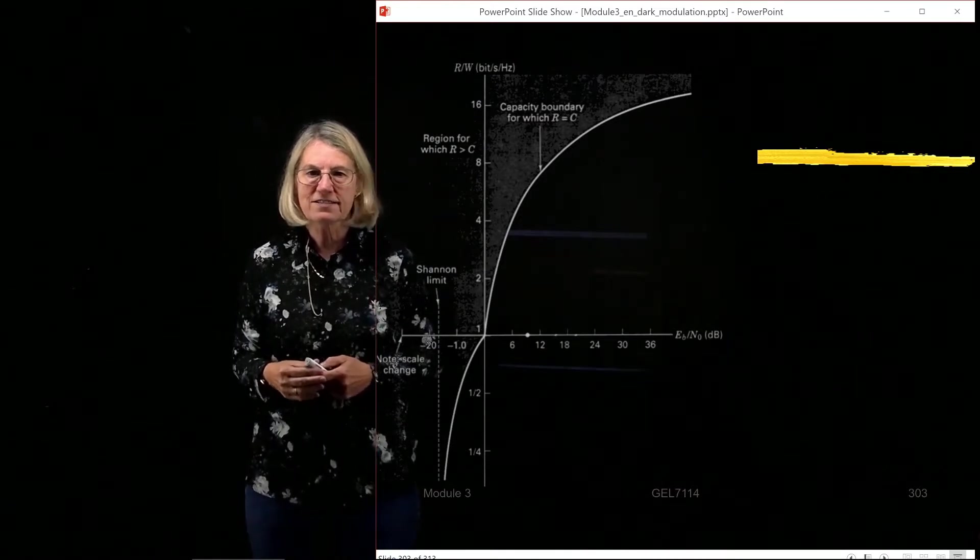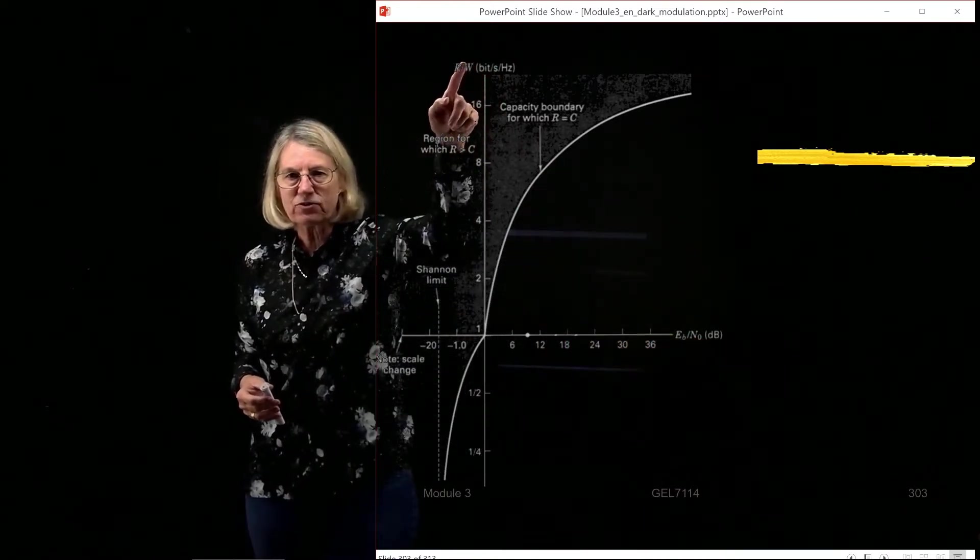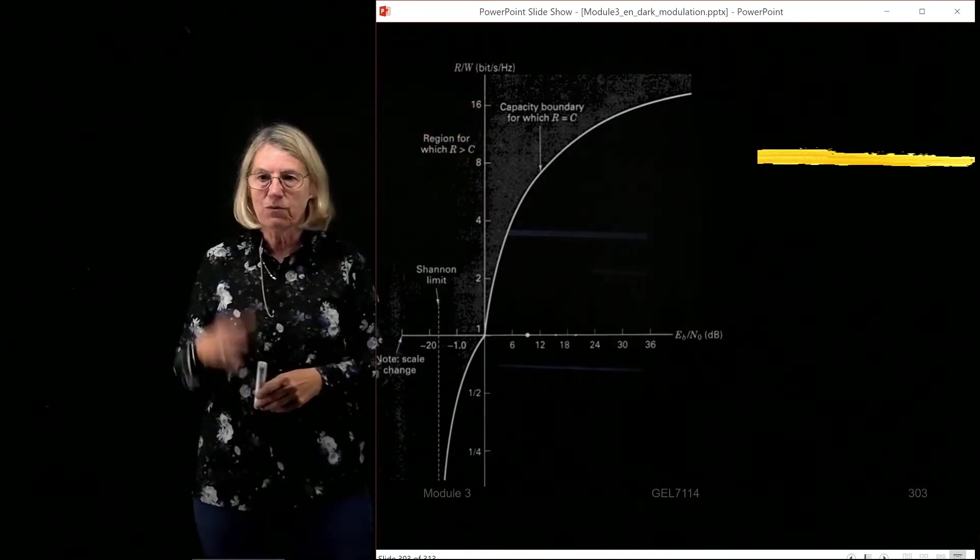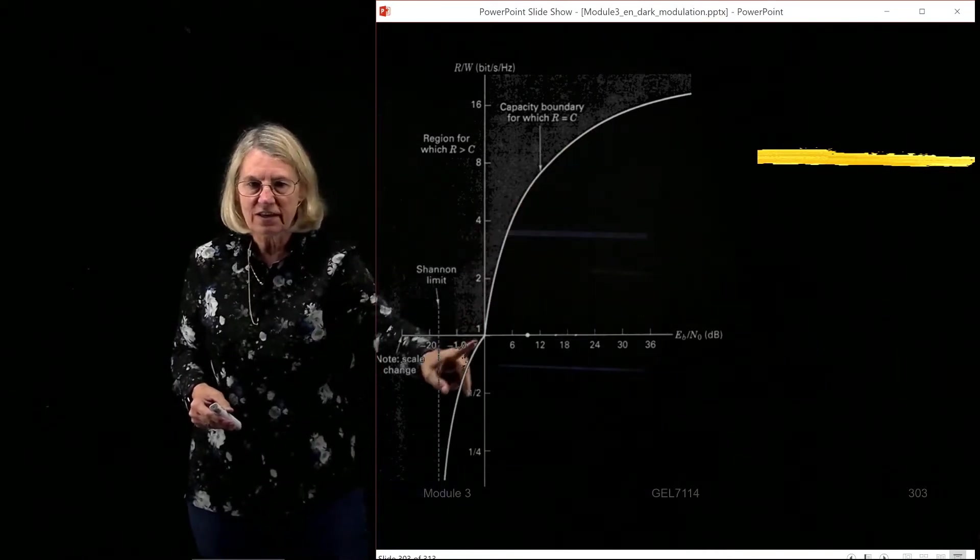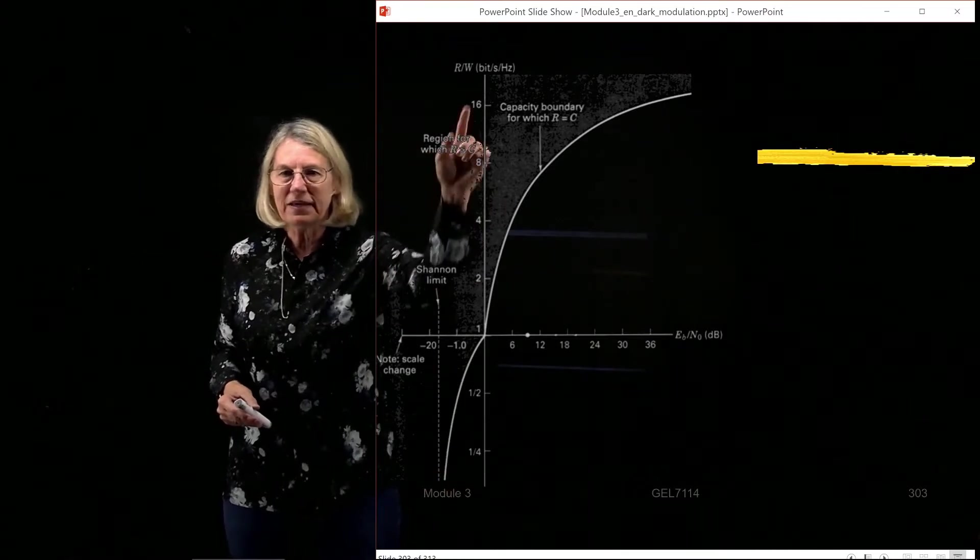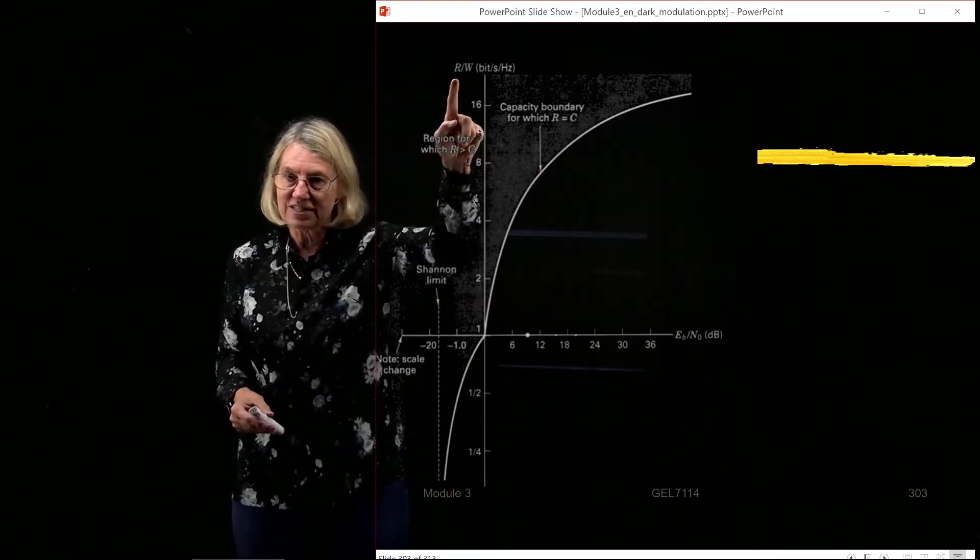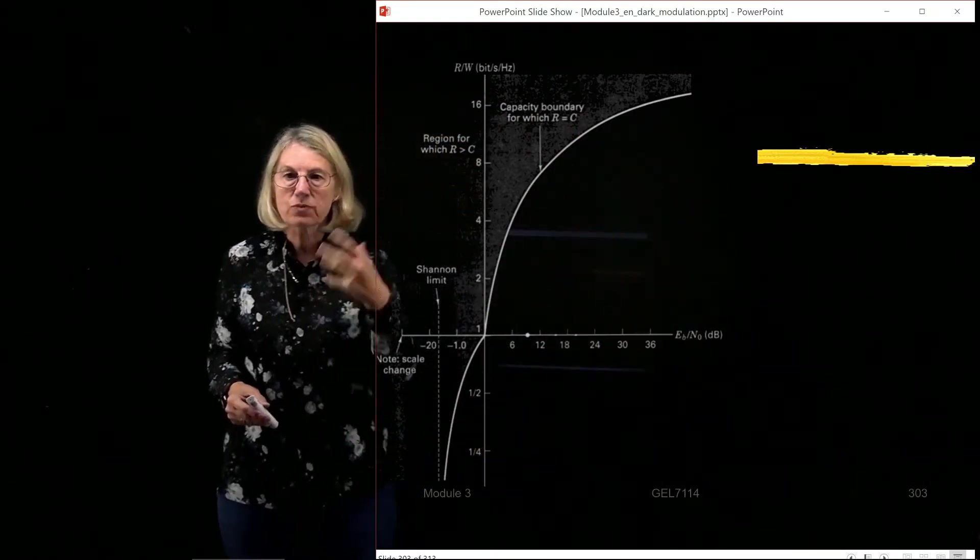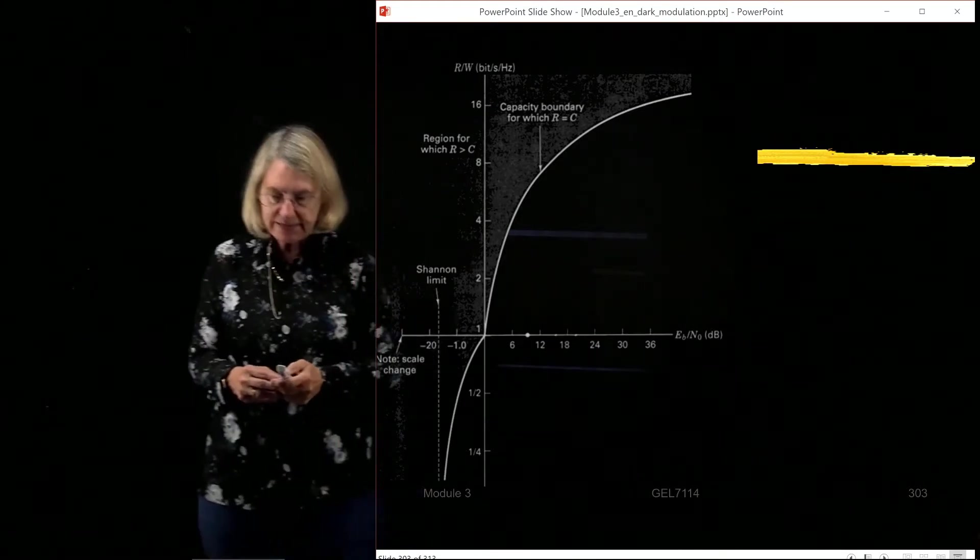So this again is the Eb over N0 on the x-axis. We have the spectral efficiency R divided by W on the y-axis, and the curve here is of course the limit for the capacity. So anything on this side would be an R which is unattainable. This line is when R is equal to C, and anything here is an attainable system, something that's realizable that does not violate Shannon's law.